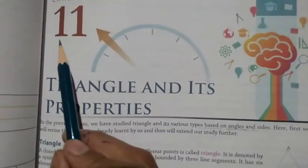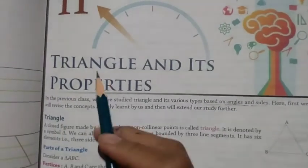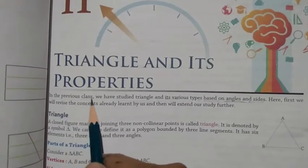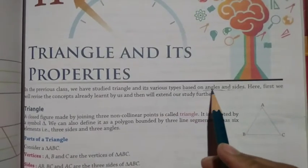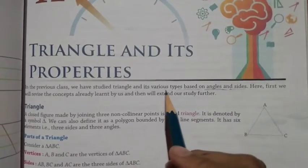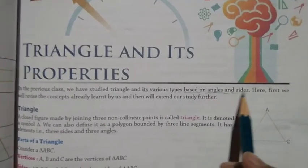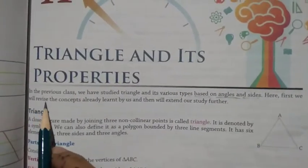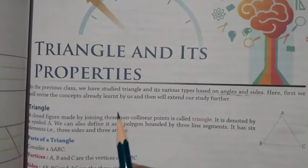Good morning everyone. Today we will start with chapter number 11, which is Triangles and Its Properties. In the previous class we have studied triangles and its various types based on angles and sides. We will see different types of angles and sides.